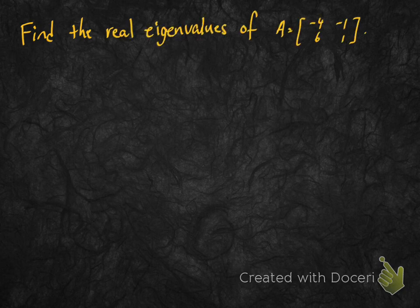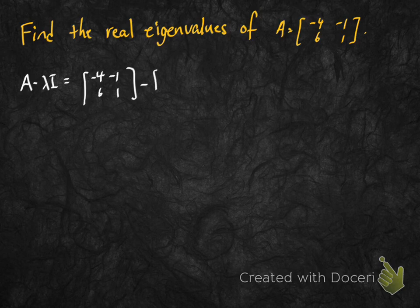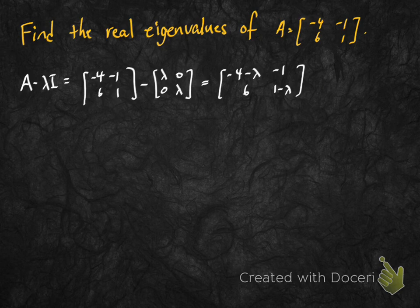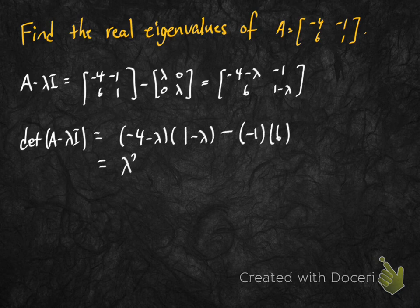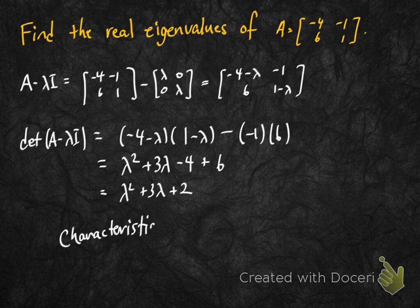Let's take a look at an example and try to find the real eigenvalues of this matrix A, which is [-4, -1; 6, 1]. We compute A minus lambda times the identity, which just subtracts off lambda from the main diagonal of the matrix. Then we compute the determinant using the formula for 2x2 matrices, multiply everything out, and get the characteristic polynomial: lambda squared plus 3 lambda plus 2.